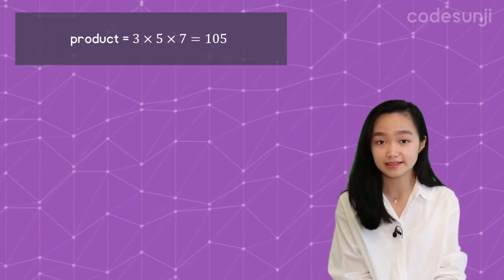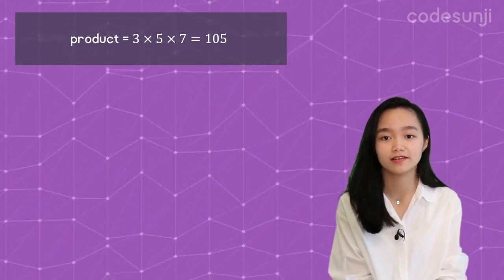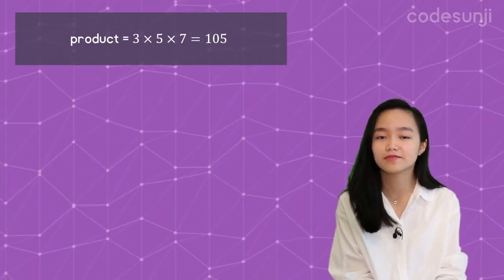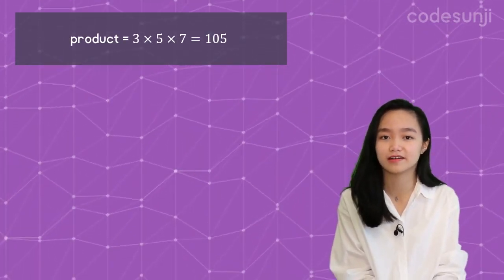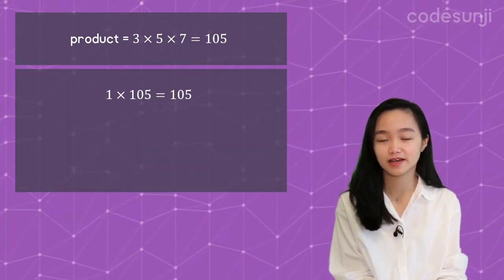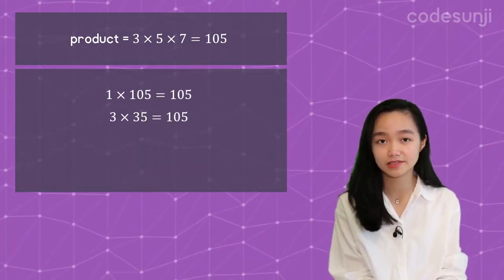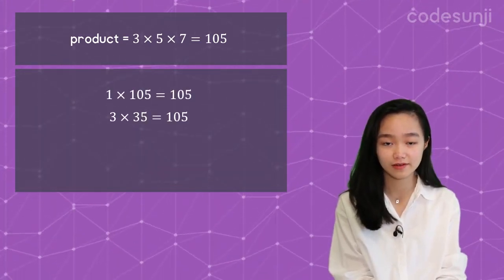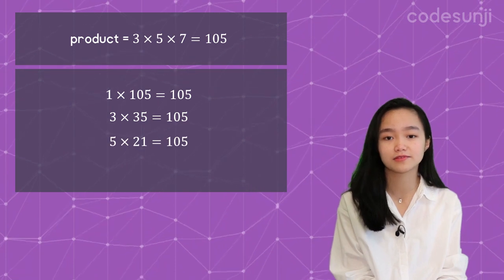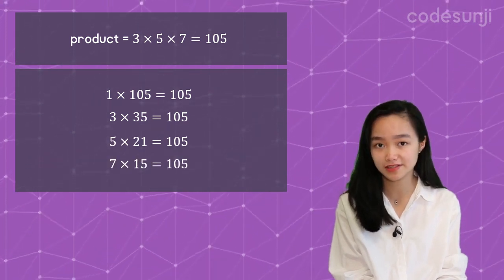The product in this case is 105. So let's think of different ways to get 105. We have 1 times 105, 3 times 35, 5 times 21, and 7 times 15.